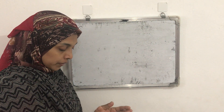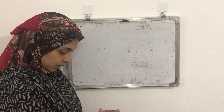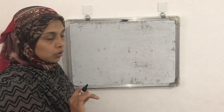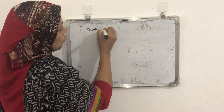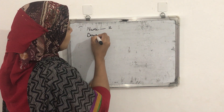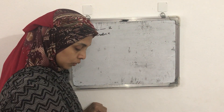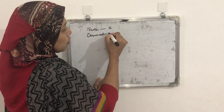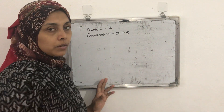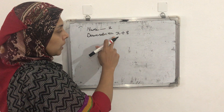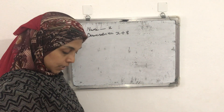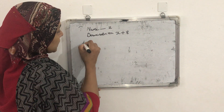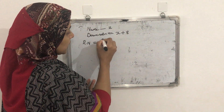The denominator is told in terms of the numerator. So we can take any variable — let the numerator be x. Then what will be the denominator? The denominator of a rational number is greater than its numerator by 8, so we add 8 to x. Numerator is x, and the denominator will be x + 8. So the rational number can be written as x / (x + 8).